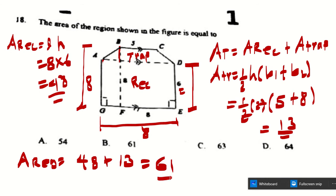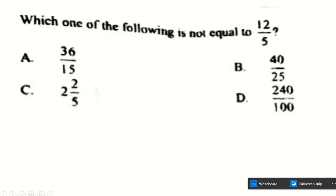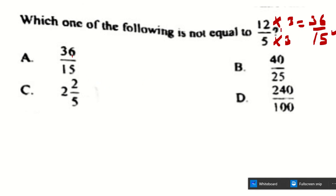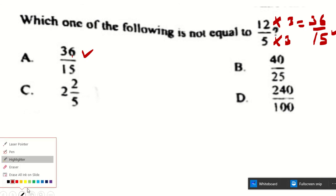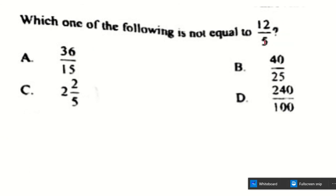The next question asks which one is not equal to 12 over 5. Checking choice A: 6 over 15 — if you multiply numerator and denominator of 6/15 by... wait, 12 times 3 is 36 not 6; actually multiplying 12/5 by 3/3 gives 36/15, not 6/15. But 6/15 simplifies to 2/5 which is not equal. However checking choice B: 40 over 25 — 12 times 5 is 60 not 40, so 40/25 is not equivalent to 12/5. The answer is B.